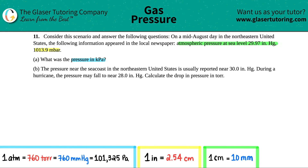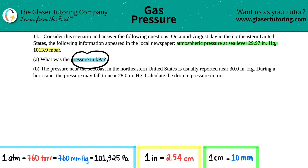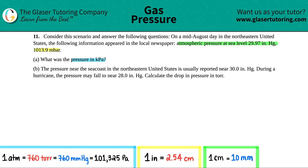These are expressing that 29.97 inches of mercury is the same as 1013.9 millibar. You just need to take one of them and find the pressure in kilopascals. I think it's easier to work with the 29.97 inches of mercury, so we just have to convert that to kilopascals.